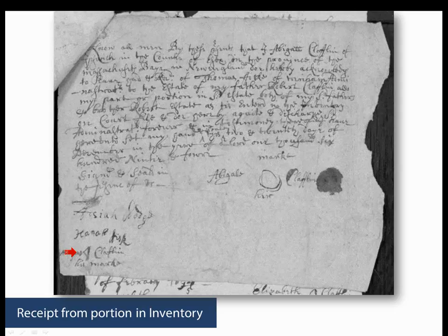Look at all the receipts in a probate. Most importantly, if the person wrote the will while daughters were unmarried, by the time the will was proved, the daughters may have married. You may catch the married name of a daughter on one of these valuable receipts — a name not recorded in the original will or inventory. The smallest pieces of paper can be worth their weight in gold in genealogical evidence.